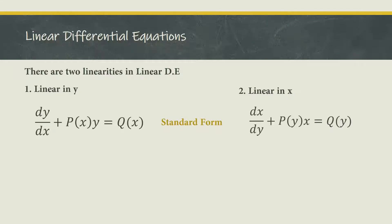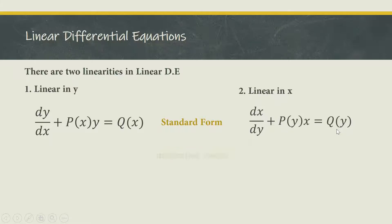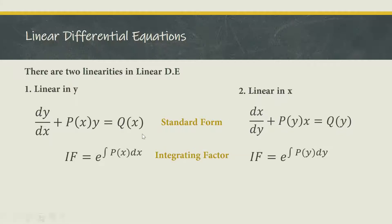In both linearities, there are specific standard forms for each. For linear in Y, that is DY/DX plus P(X) times Y equals Q(X). For linear in X, DX/DY plus P(Y) times X equals Q(Y). The integrating factor for linear in Y is e raised to the integral of P(X) DX, and for linear in X, e raised to the integral of P(Y) DY.